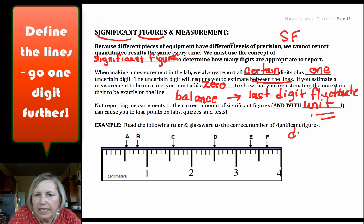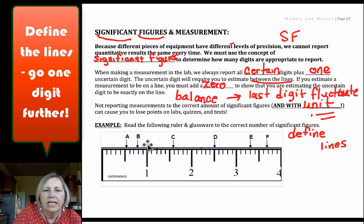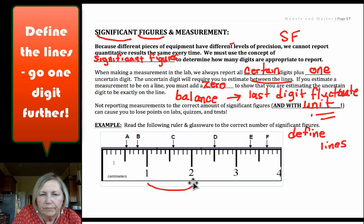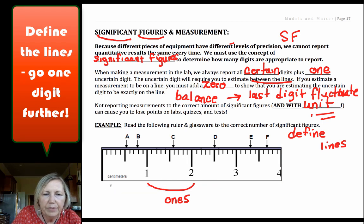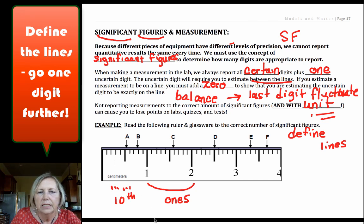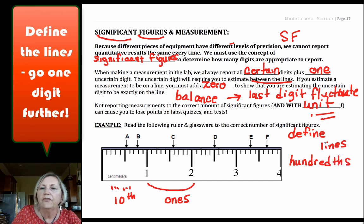The first step if you have something with lines, if it's a balance you're just reading the numbers, but the first thing we want to do is define the lines. Here the large line is the ones place, so it goes 1, 2, 3, so that differs in the ones place. That means the small lines in between differ by the tenths place. That means we're going to go one digit beyond what the lines define and we're going to go to the hundredths place. So you define the lines and go one more than that.